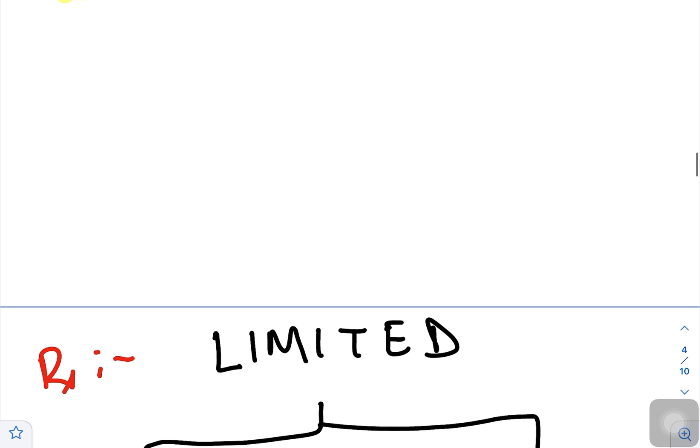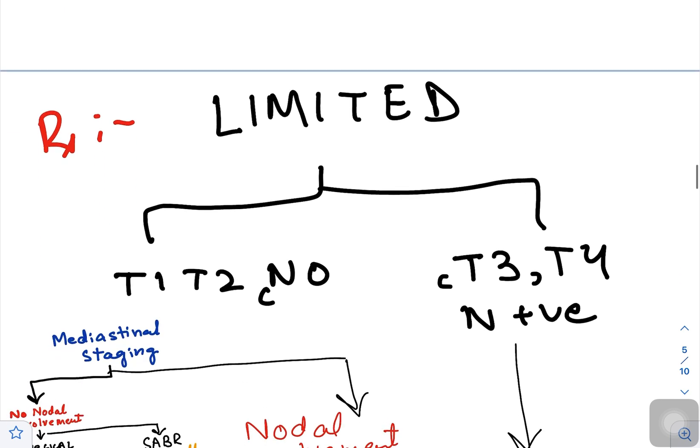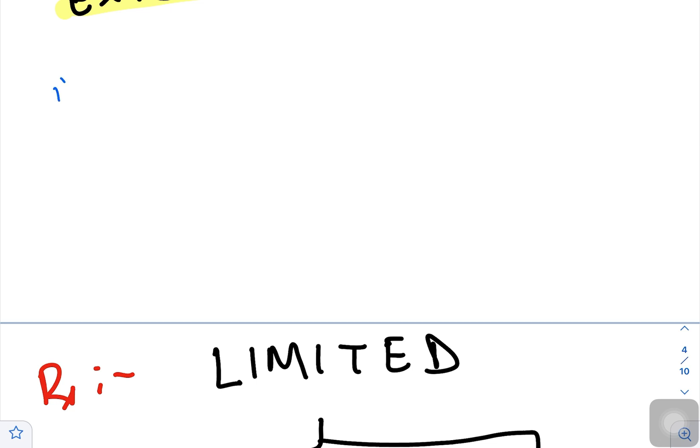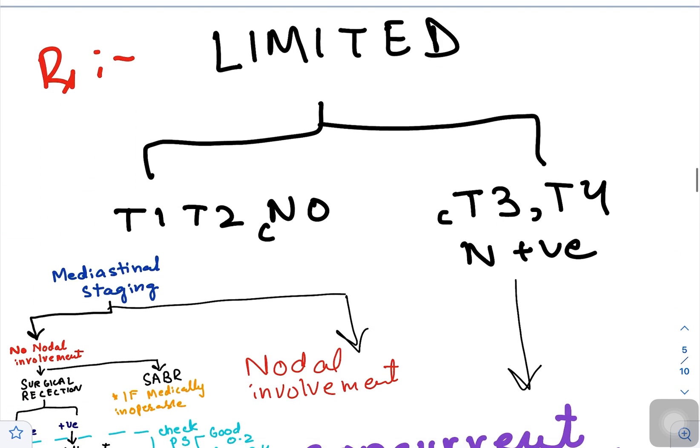Now coming towards the treatment part. One more important factor: it exclusively occurs in smokers, but in 2 percent can occur in non-smokers as well. The treatment depends on limited or extensive disease. Let's talk about limited disease first.